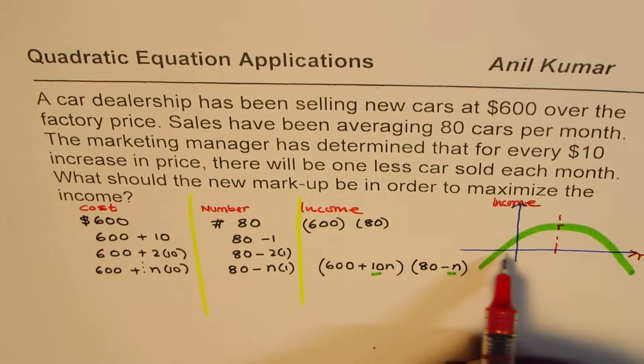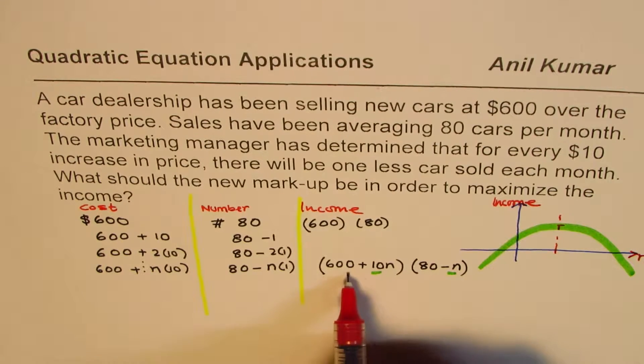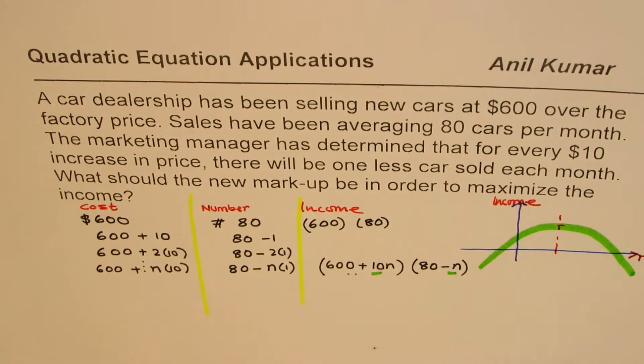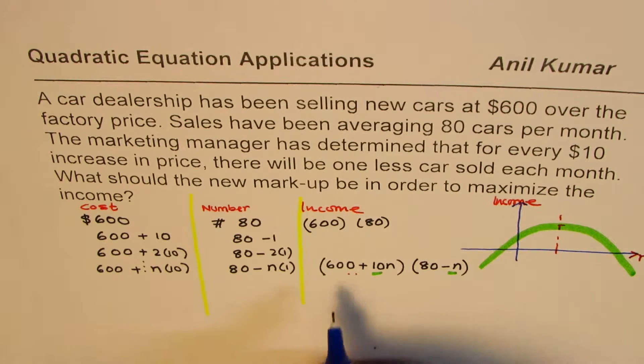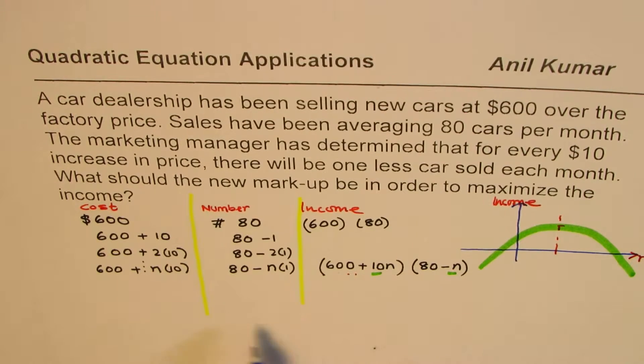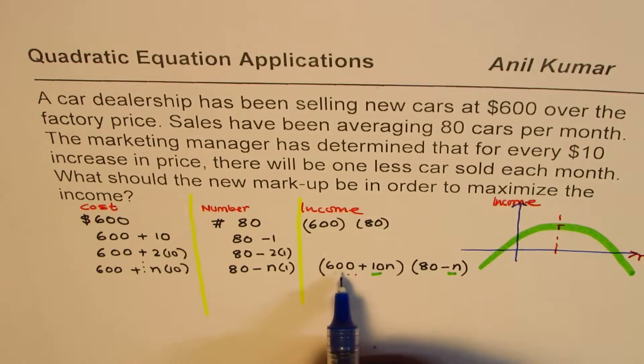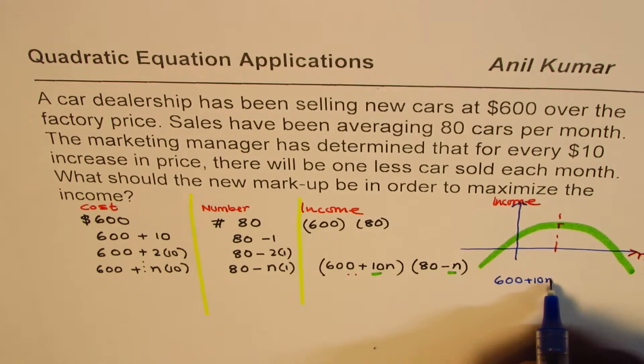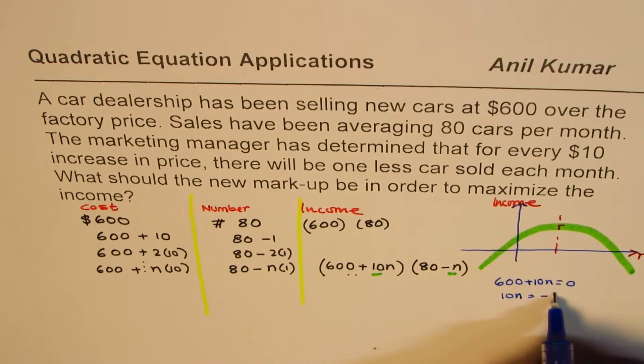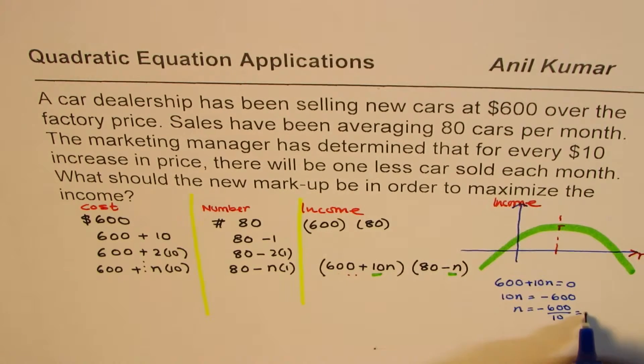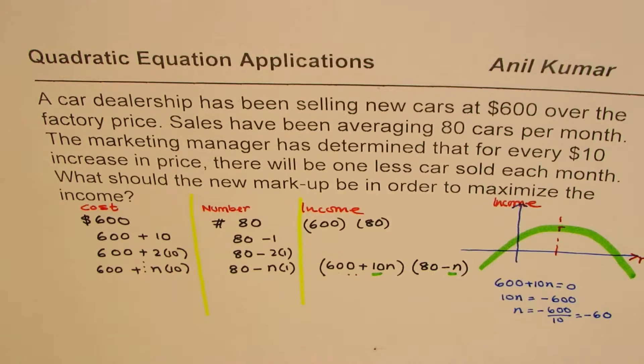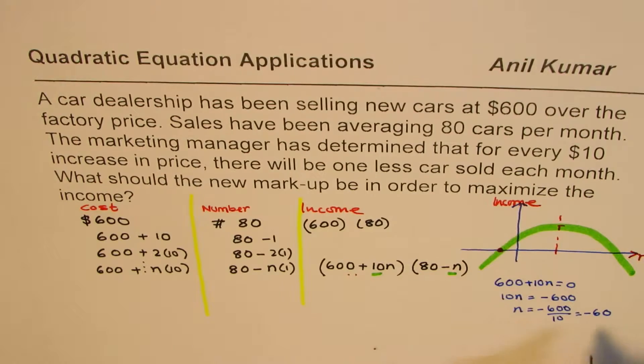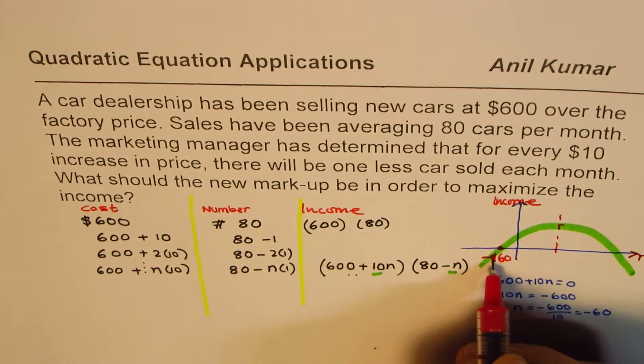One zero is this one, which is at which point? Let's find this out. So I'm showing you a shortcut method to solve this question. We can do another way also. So I left this space for alternate method. I hope you love this one. So the zero from here will be at n equals to, we can find like this: 600 + 10n = 0. 10n = -600, n = -600 divided by 10, which is minus 60. So that means one of the zeros here is at this point, which is minus 60.